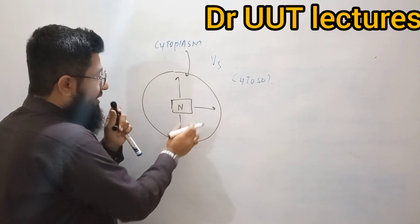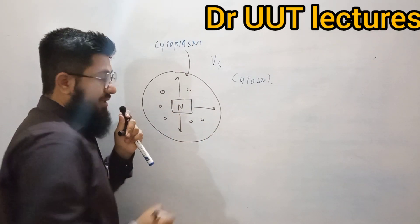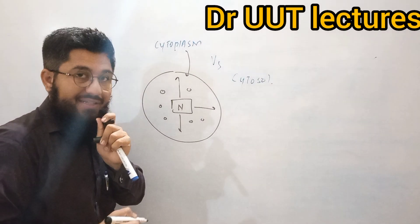So beside the nucleus, we have some kind of tiny organelles. Tiny organelles like Golgi bodies, mitochondria, etc.